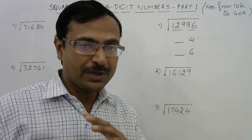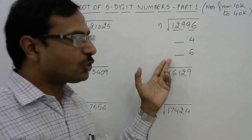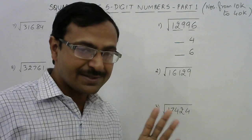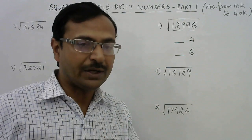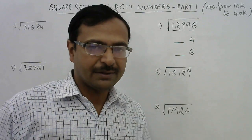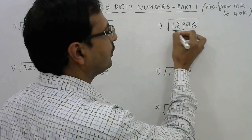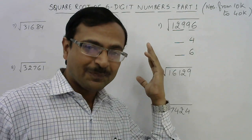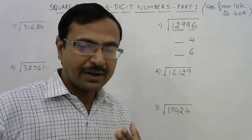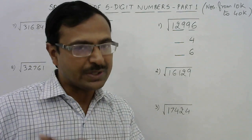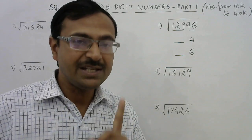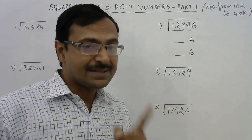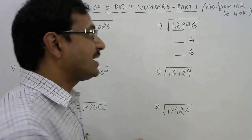So the square root of 12996 will either end with 4 or 6. The remaining part of the answer will be the same in both cases, giving us only two options to choose from. Now look at the triplet 129: find the perfect square just below 129. You need to know squares from 11 to 20. 11² = 121, and 12² crosses 129, so the perfect square below 129 is 121, meaning 11 is the remaining part of the answer.